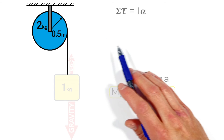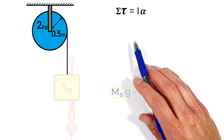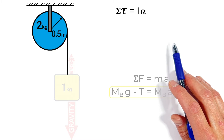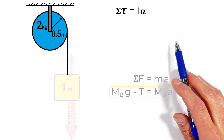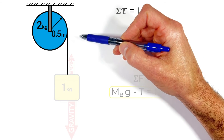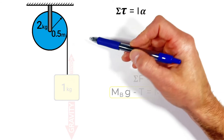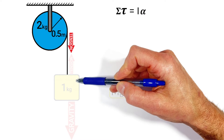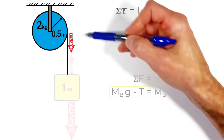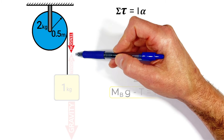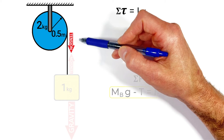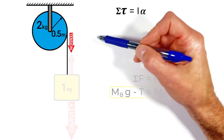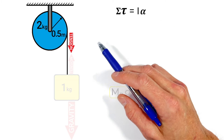The rotational version of Newton's second law states that the sum of all torques acting on an object causes that object's rotational inertia to go through some angular acceleration. Looking at this pulley, the only force producing a torque around the axle is the tension in the string. If the string is pulling up on the block, it must be pulling downward at the other end where it connects to the pulley, acting at some radius relative to the center — producing a torque.